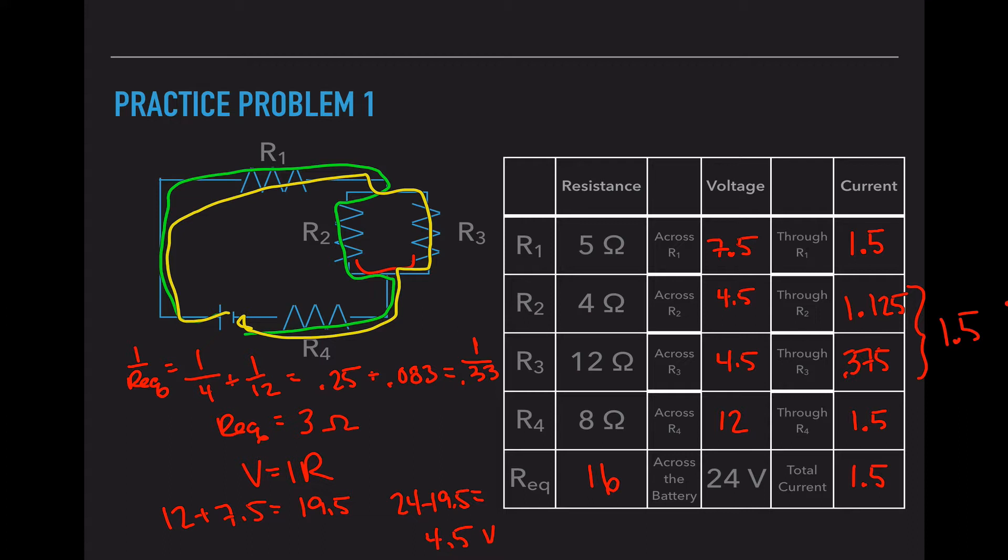So we've used both series and parallel relationships to solve for this. We combined our parallel resistors first to find an REQ. Then we added our three resistors in series to find our new total resistance. We solved for our current, which is our total current, as well as the current in the two series resistors. We solved for the voltage drop in those two resistors. We solved for the voltage that is left over that we still need to use. Plugged those into our two parallel circuits. Then solved for the last two current values. So this is kind of overwhelming. We're going to do at least one more together in the video, and then we'll look in class and see if we need to talk some more.